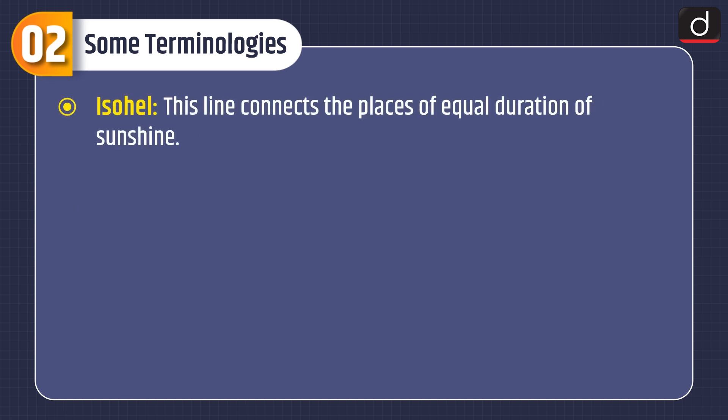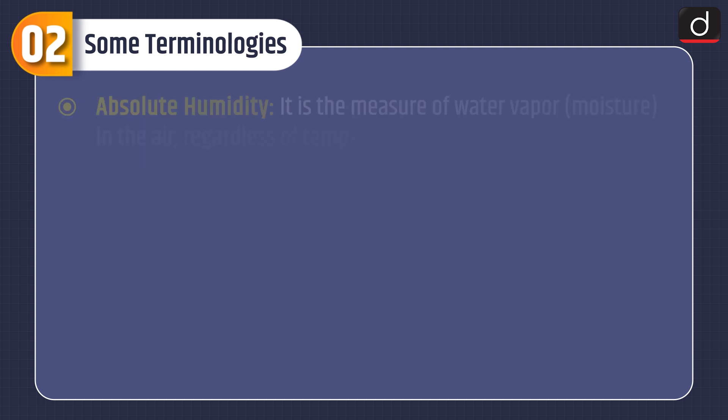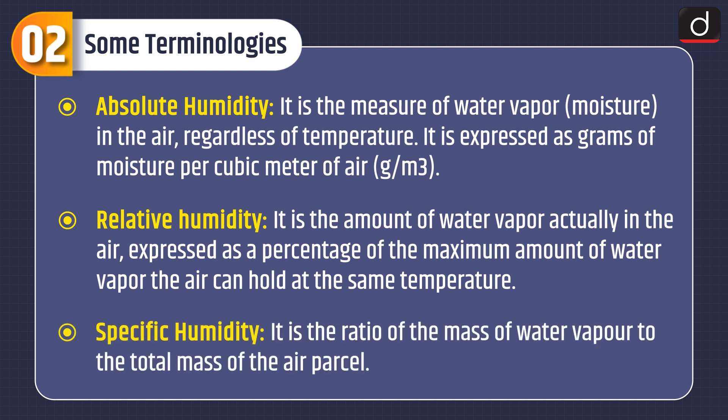Isohull is a line that connects places of equal duration of sunshine. Isoneph is a line on a map connecting points that have the same average percentage of cloudiness. Humidity is the amount of water vapor in the air. Absolute humidity is the measure of water vapor, i.e. moisture, in the air regardless of temperature, expressed as grams of moisture per cubic meter of air.